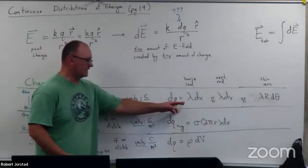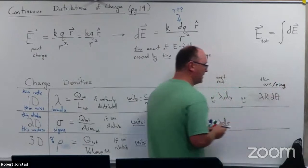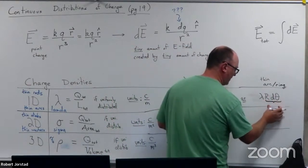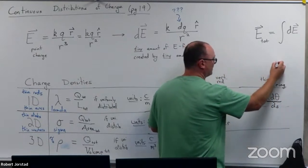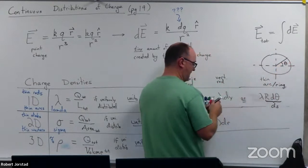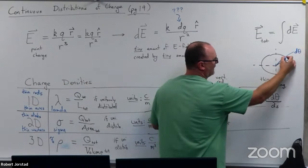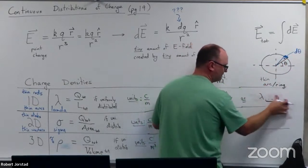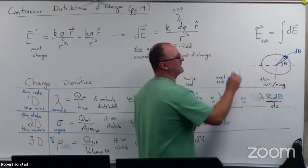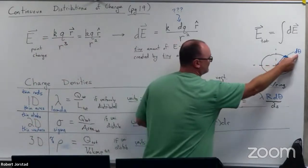For a thin rod we used lambda·dx. For a thin arc or ring, we use lambda·R·dθ. You can think of R·dθ as arc length. If you imagine a small portion of a circle starting at angle θ and changing by tiny angle dθ, the arc length associated with that tiny change is R·dθ. That's why we use dθ and not theta — we get a tiny portion of the ring and therefore a tiny portion of the charge.